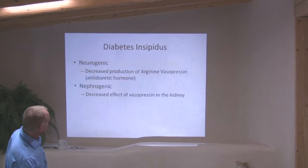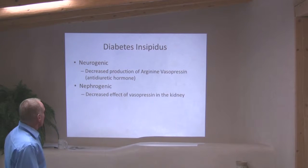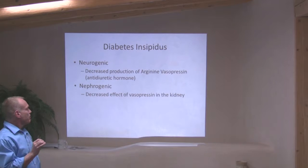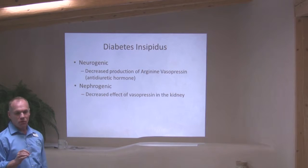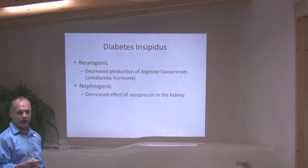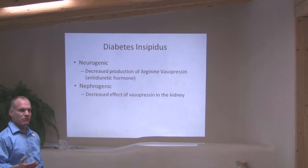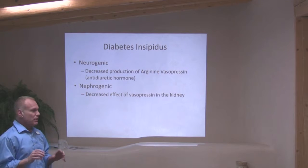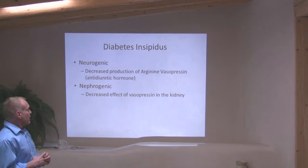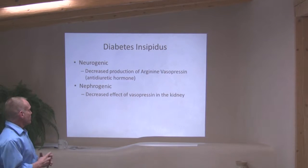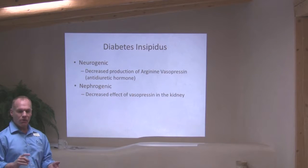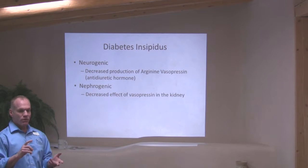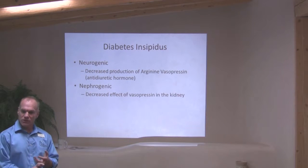Diabetes insipidus has to do with the brain and the kidney. The pituitary gland makes a hormone called anti-diuretic hormone — ADH. A diuretic like Lasix makes you pee a lot; anti-diuretic means you're not peeing a lot. The other name for ADH is arginine vasopressin. The two types of diabetes insipidus are when you don't make anti-diuretic hormone, or when it gets to the kidneys and the kidneys don't recognize it.